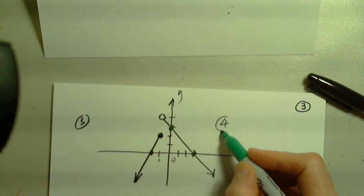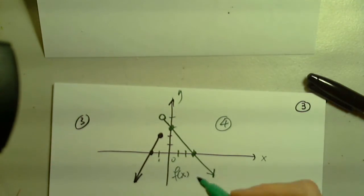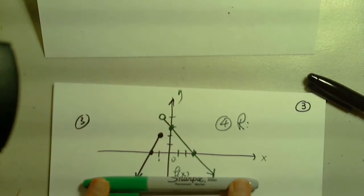So step number four: this is our function f(x), we need to identify the range for this. What would that be? Negative infinity, comma...